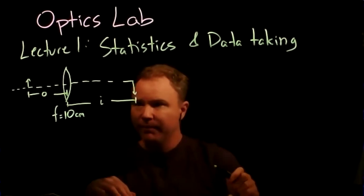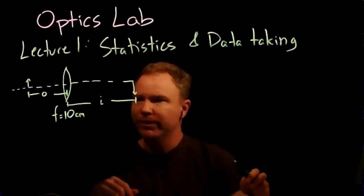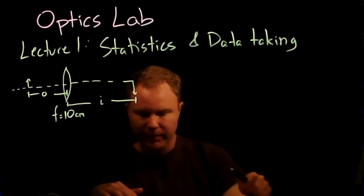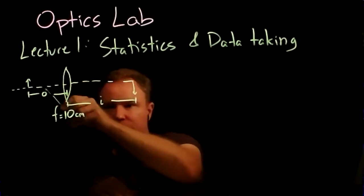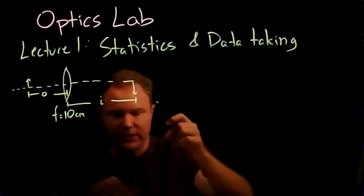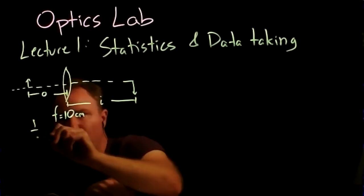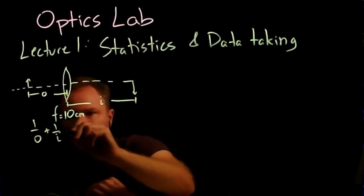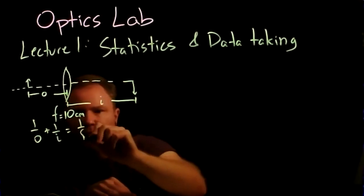I'll go through this derivation, or you will go through some of it in a future lecture or homework. The relationship between the three quantities — object distance, image distance, and focal distance — is that 1/O + 1/I = 1/F.